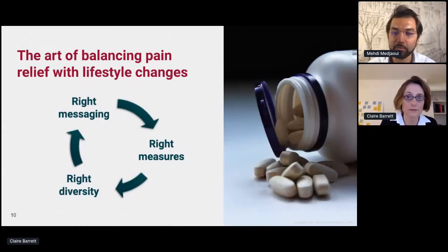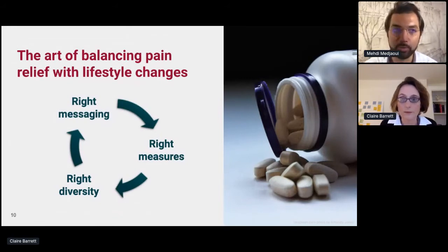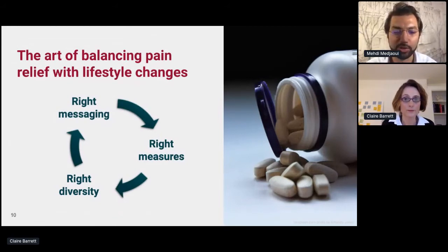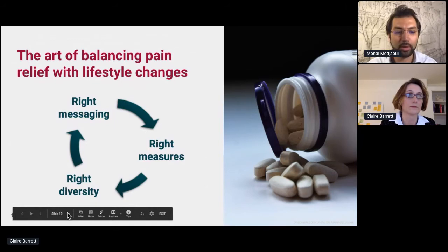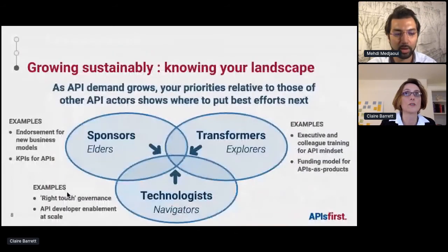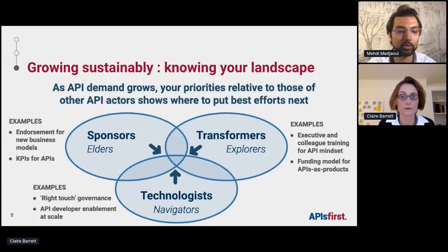Thank you, Claire. There's a question about how each of the three circle groups — the sponsors, the technology leaders, and the explorers — come into the API program and influence each other. The elders are going to be influencing the explorers, expecting them to push the boundary for finding new and more adventurous API opportunities. The explorers will work to influence the sponsors and may live in functions like the digital transformation team or innovation team. Their opportunity is to bring great ideas to sponsors and explain what an API capability will do for the organization strategically — that this is not just a tech or IT thing.